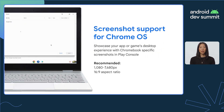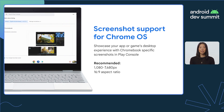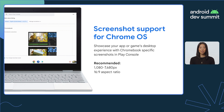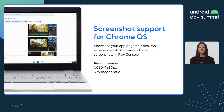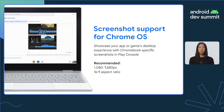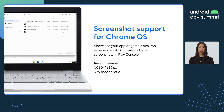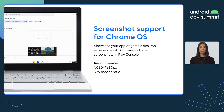We're also excited to roll out screenshot support for Chrome OS. Now, in Play Console, you'll be able to upload screenshots to highlight unique desktop features. These screenshots should be between 1080 and 7680 pixels, with a 16 by 9 aspect ratio for assets in landscape and a 9 by 16 aspect ratio for those in portrait. To get started, you can visit the main store listing section in Play Console.